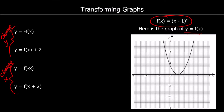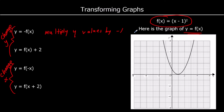For y equals minus f of x, that multiplies the output of the function — it multiplies the y values by minus 1. So this is a transformation that will multiply the y values by negative 1.